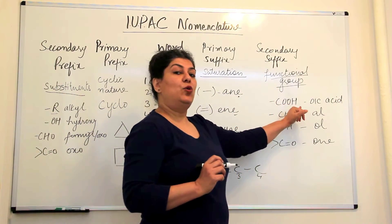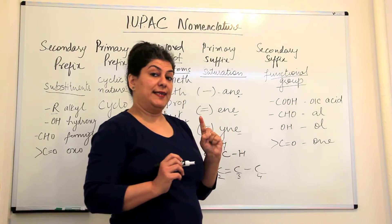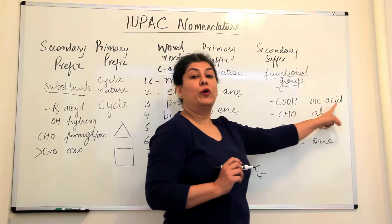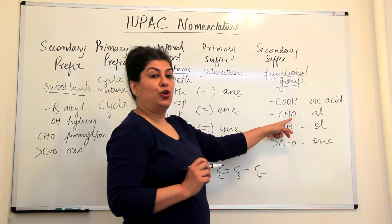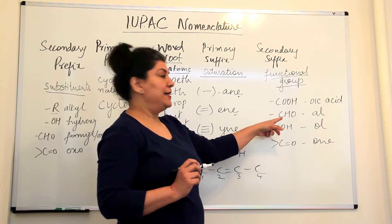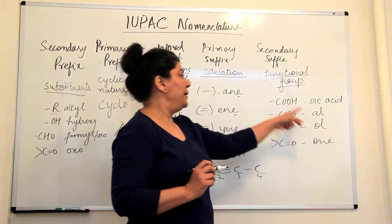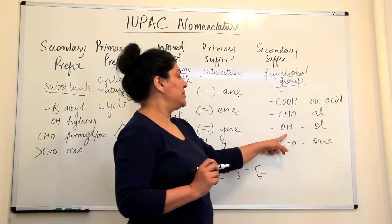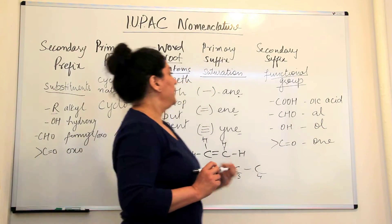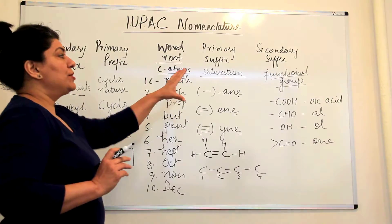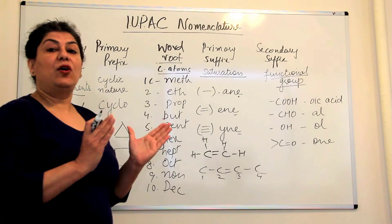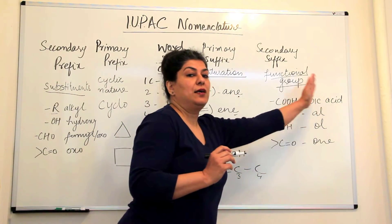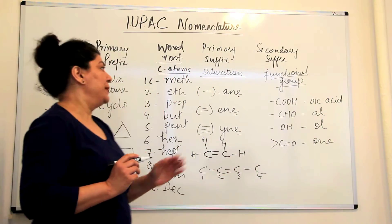Any hydrocarbon having a -COOH group would be a carboxylic acid, and the suffix used would be '-oic acid.' If it has -CHO, it is an aldehyde and the suffix would be '-al.' If it has -OH, it is an alcohol and the suffix would be '-ol.' This secondary suffix gives us an idea of the functional group, and the suffix specific to that functional group is used.